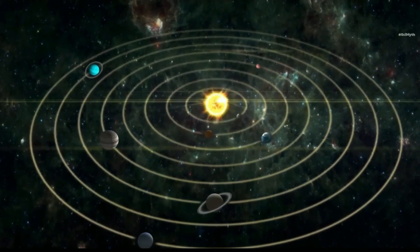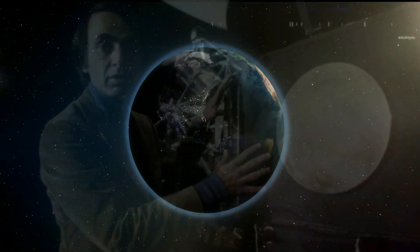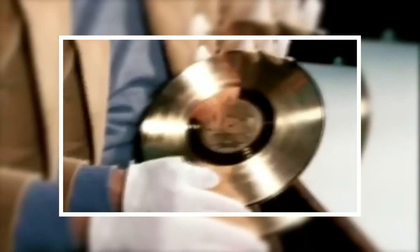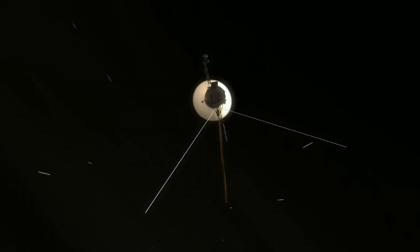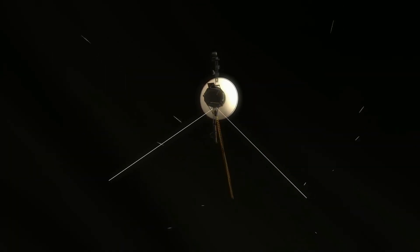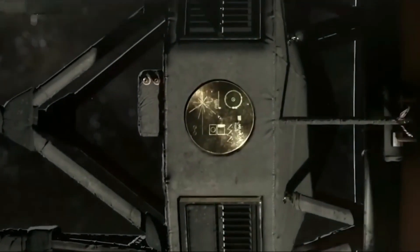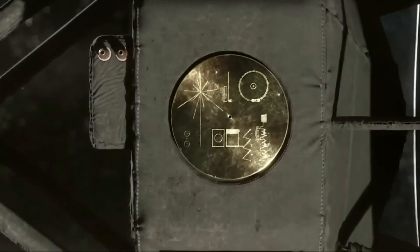As part of this mission, we sent a Golden Record. The Golden Record is a 12-inch gold-plated copper disc designed to last billions of years. It contains carefully selected sounds and images representing Earth's culture, biology, and diversity.